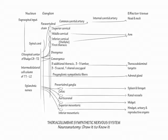Those targets that receive only sympathetic innervation are the blood vessels to the skeletal muscle and skin, sweat glands, and hair follicles. This concludes our drawing of the motor component of the thoracolumbar sympathetic nervous system.